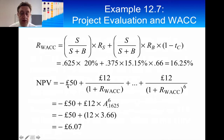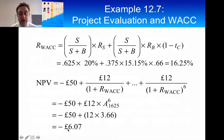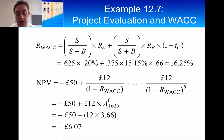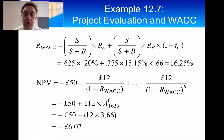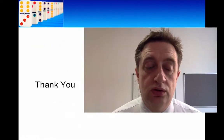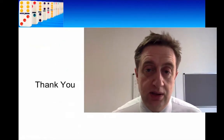The project being considered costs £50 million and will give savings of £12 million a year for six years — that's an annuity. Using our annuity formula with a discount rate of 16.25%, we arrive at a net present value of minus £6.07 million. So using the weighted average cost of capital, you would not accept this project because the NPV is less than zero.